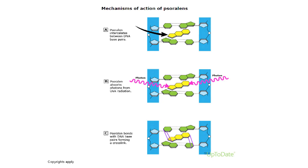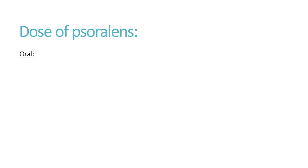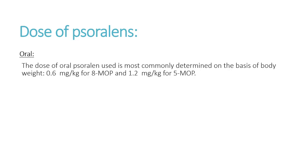Here you can see the mechanism of action of psoralen. First, psoralen compounds intercalate between DNA base pairs. On exposure to ultraviolet A radiation, psoralen absorbs photons from UVA radiation, then bonds with DNA base pairs forming a cross-link, thus inhibiting DNA replication.